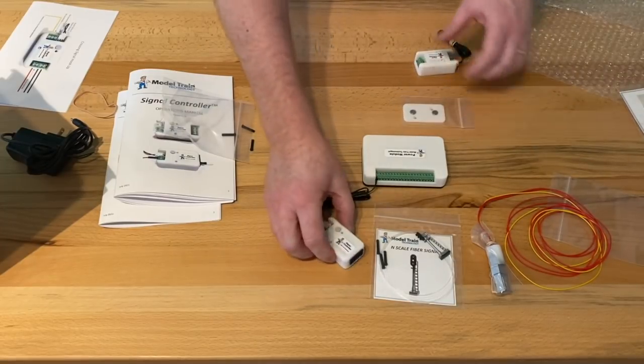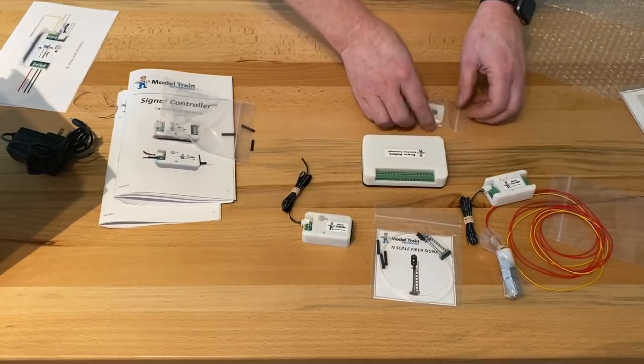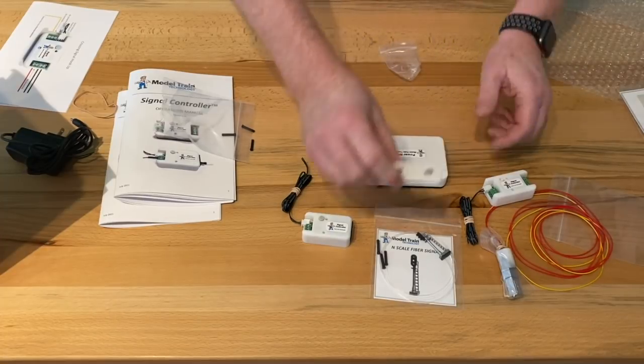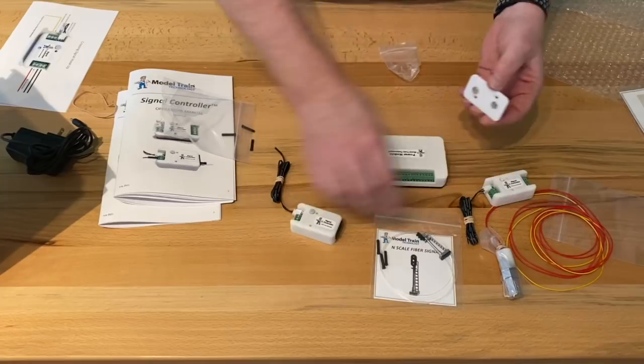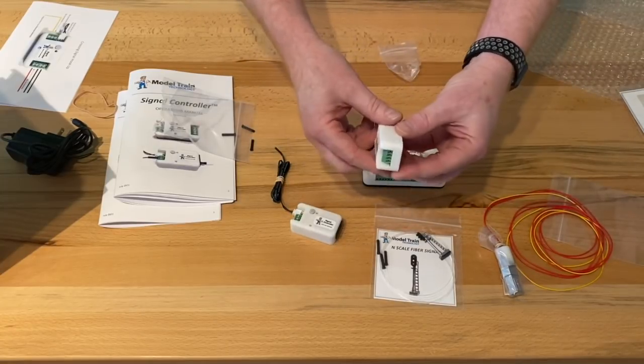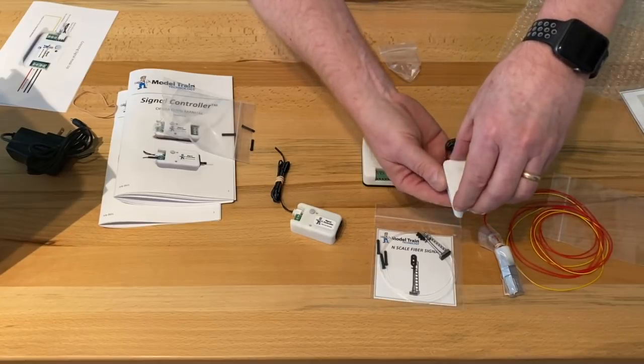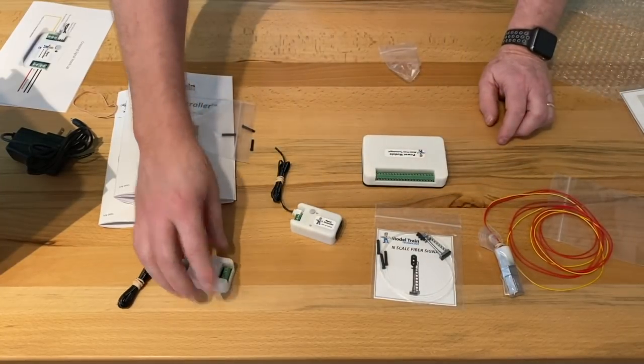Okay. Now for the signal controllers, here are the two signal controllers. They also have magnetic brackets and in the bundle kit, the startup kit, we include a magnetic bracket for starter kits. Okay. So there's one and there's one and they just fasten just like that. And you can put that under the layout and it'll stick there and it's pretty firm. So you don't have to worry about that.